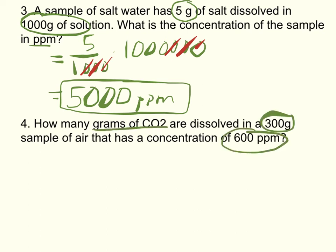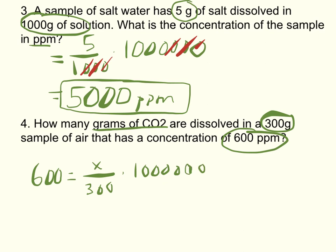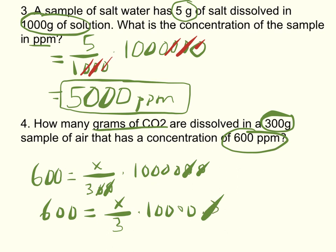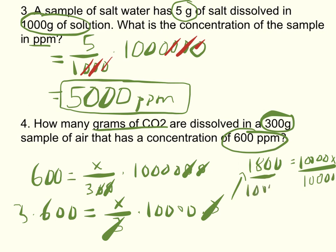Number four: how many grams of CO2 are dissolved in a 300-gram sample that has a concentration of 600 PPM? So PPM is 600, equals x over 300 times one million. Cancel zeros, leaving 600 equals x over 3 times 10,000. Multiply both sides by 3: 1,800 equals 10,000x. Divide both sides by 10,000: x equals 0.18 grams.